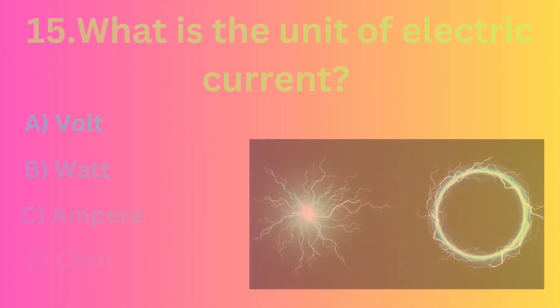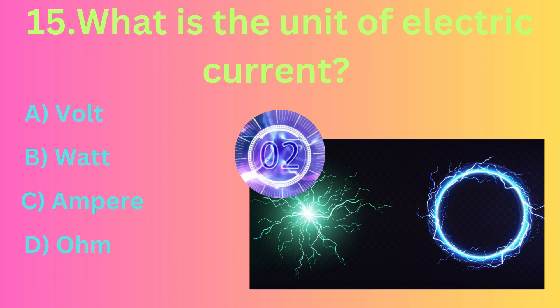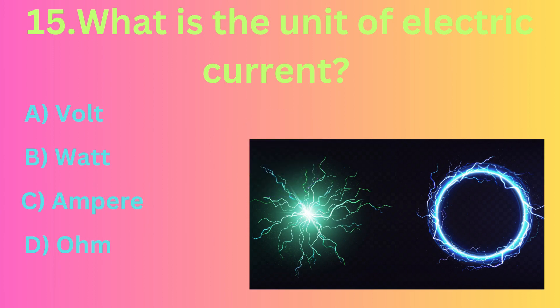What is the unit of electric current? The correct answer is option C, Ampere.